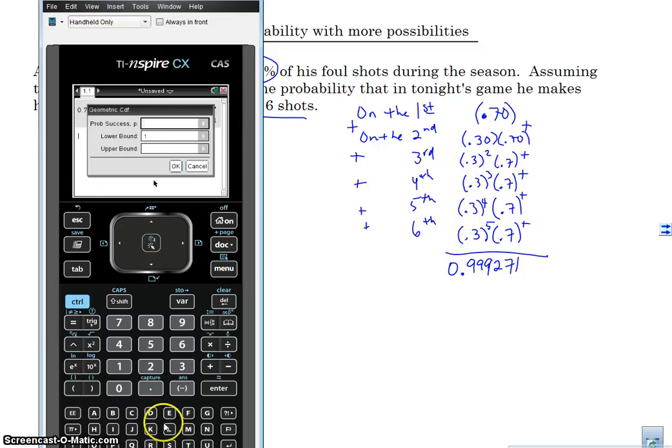So my probability of success is 0.7. So I'm going to put 0.70. My lower bound is 1. My lower bound is the number of shots that I want to make within my upper bound is the number of shots that I'm going to shoot. So my lower bound is the number of, you know, my lower bound is my first one is 1, right? And the first shot. And then my upper bound is the sixth shot, the last shot.